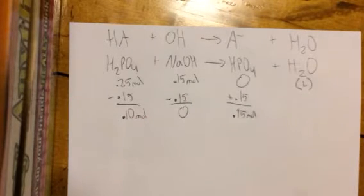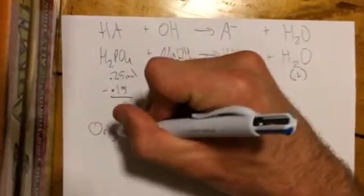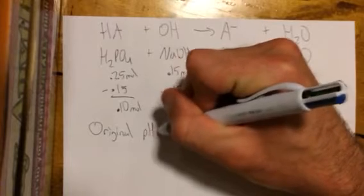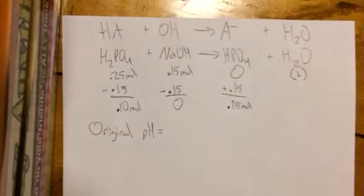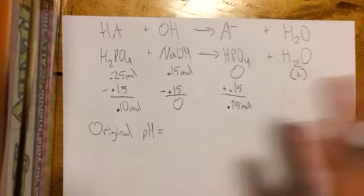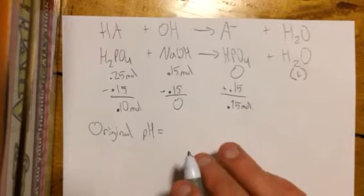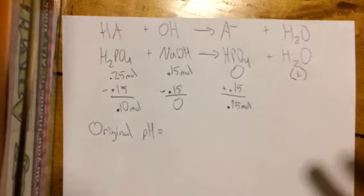Next, so now I think we should just figure out what the original pH is of this problem. So the original pH, you know the Henderson-Hasselbalch equation: pH equals the pKa. In this problem we can just look up the Ka, and the Ka in this case is 6.3 times 10 to the negative 8.